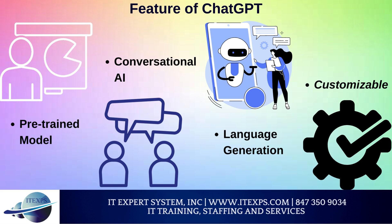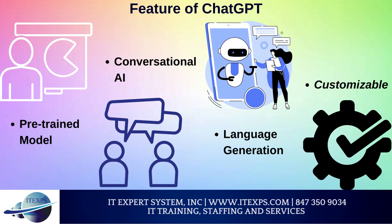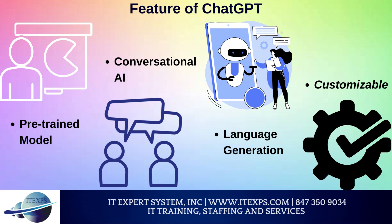Features of ChatGPT. Here are some of the key features of ChatGPT. Pre-trained Model: ChatGPT is a pre-trained language model, meaning that it has already been trained on a large corpus of text data, allowing it to generate human-like responses. Conversational AI: ChatGPT is designed for conversational AI applications, such as chatbots, virtual assistants, and customer service systems.